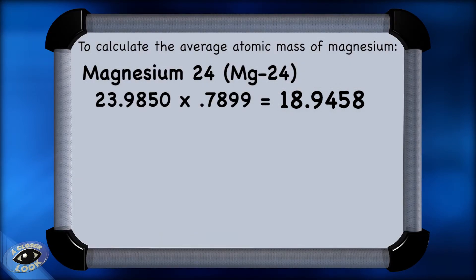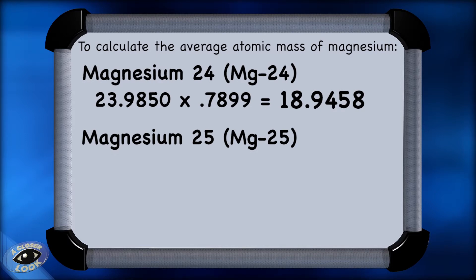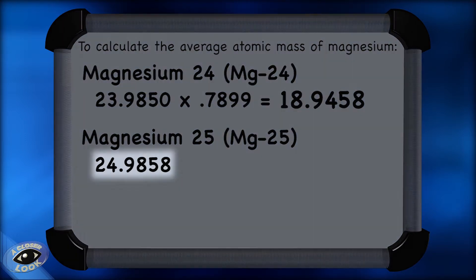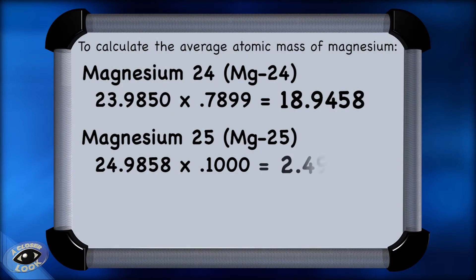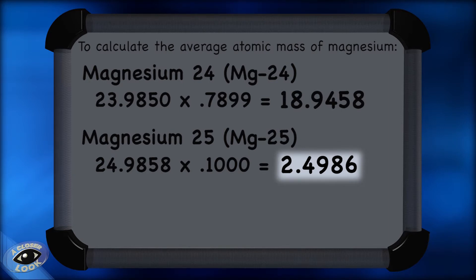We do the same thing for the second isotope, magnesium-25, with a mass of 24.9858 AMU, so that's 24.9858 times .1000, which is the abundance of 10% in decimal form, and that gives us 2.4986.